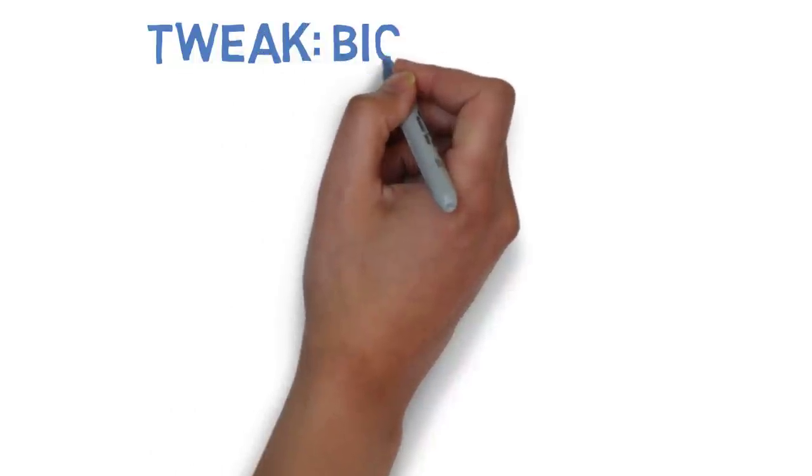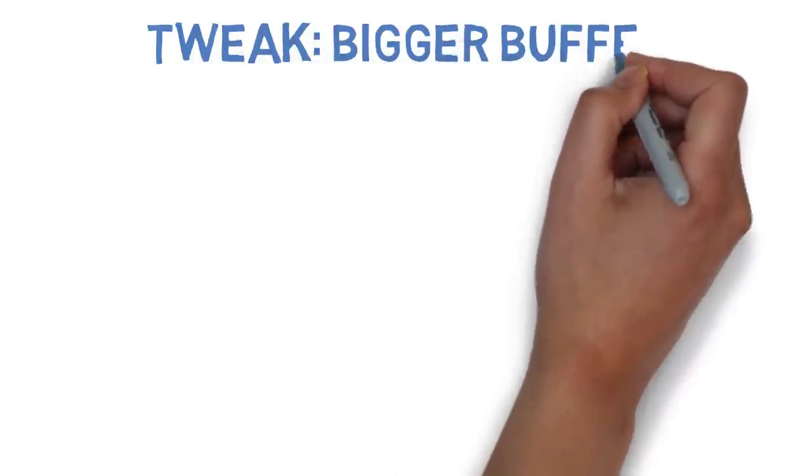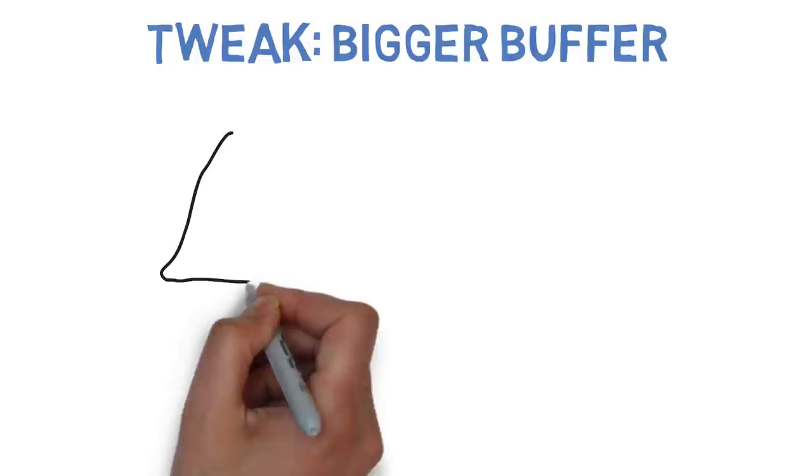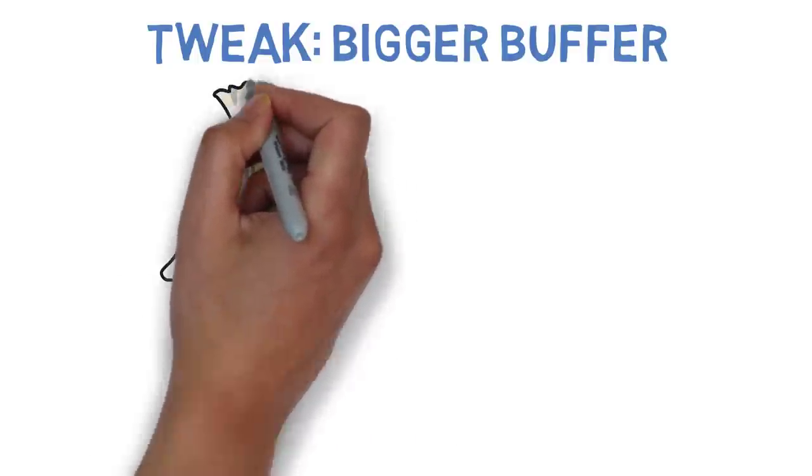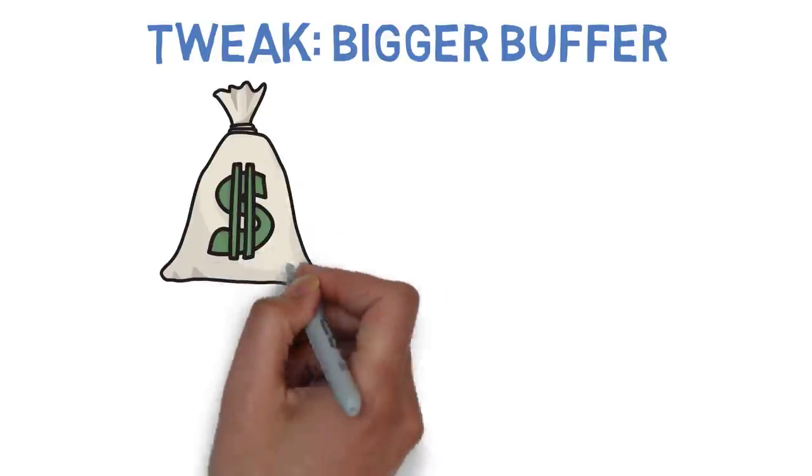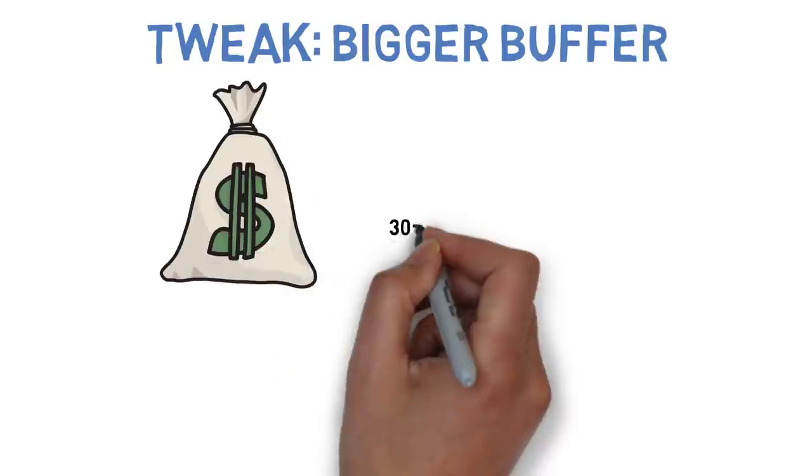The first tweak to the buffer that people have made is to make a bigger one. Instead of having two years worth of survival expenses stashed away they may have three, four, or even five. However, given that building these larger cash buffers also takes time there might be a point of diminishing returns.